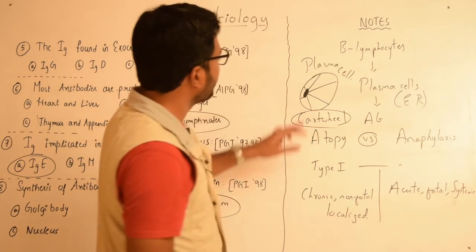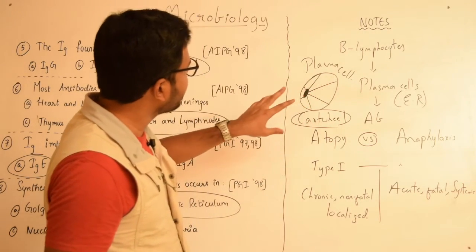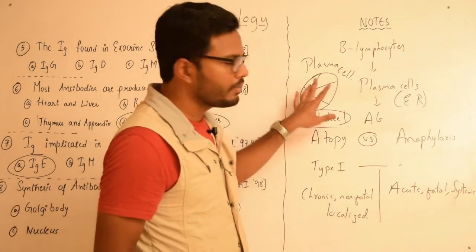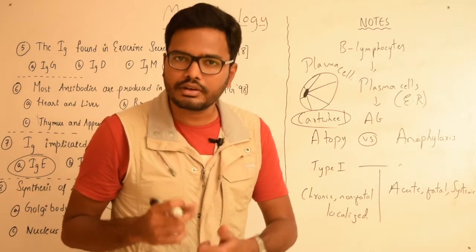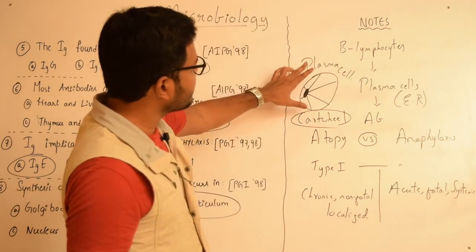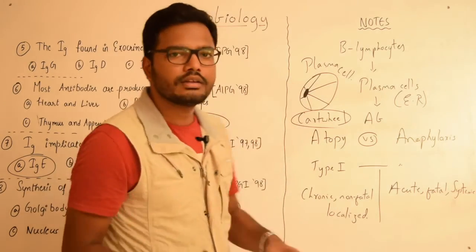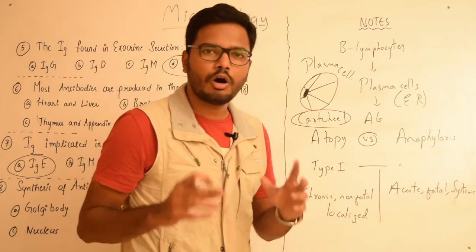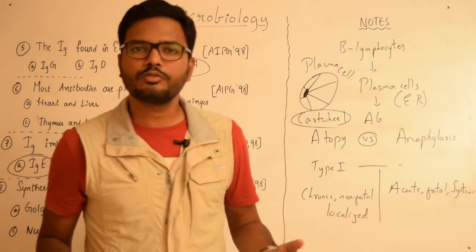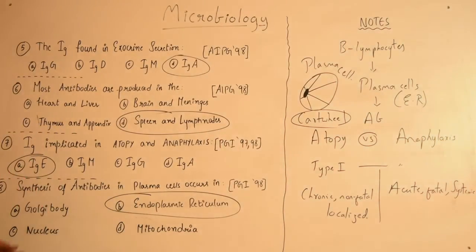We have oval-shaped nucleus with peripheral chromatin material giving it a cartwheel appearance, and it contains a lot of cytoplasm and abundant endoplasmic reticulum and Golgi apparatus. These plasma cells, as discussed previously, synthesize antibodies within endoplasmic reticulum. So the organelle where the synthesis of antibodies occurs is endoplasmic reticulum. These are a few more questions and important points pertaining to these model questions.